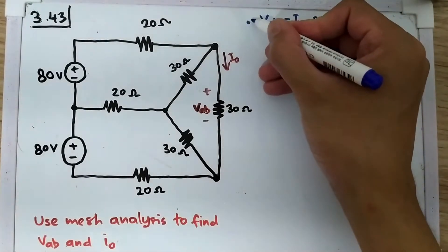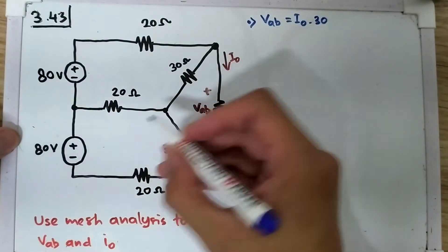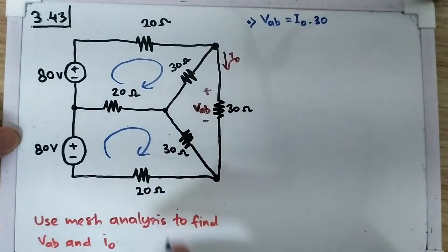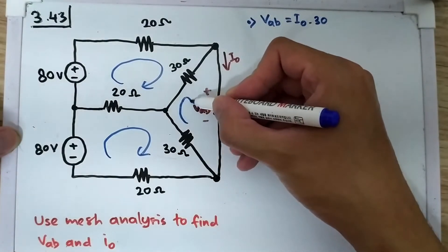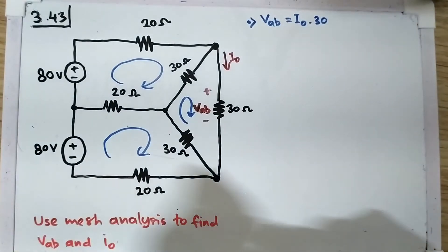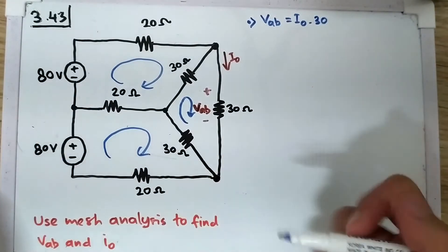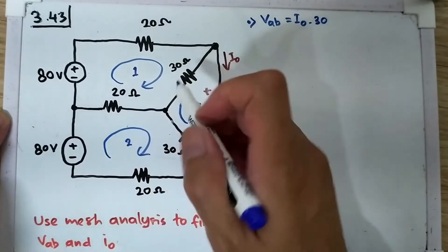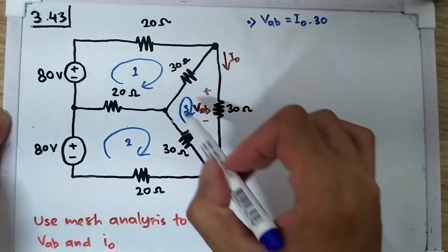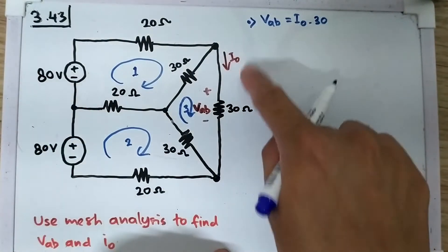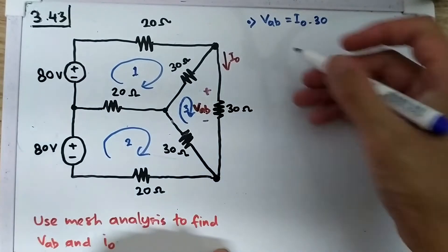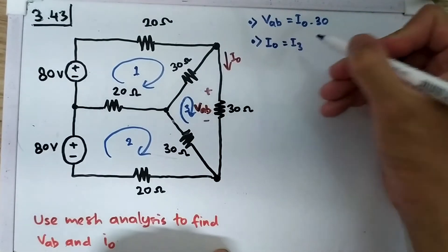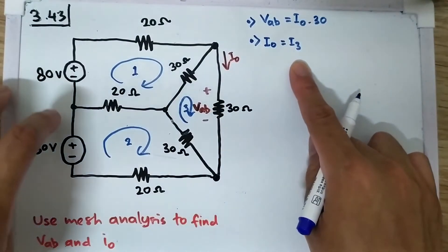Let's draw the loops — I'll draw them clockwise, though you can draw them counterclockwise and get slightly different calculations but the same result. I'll name each loop: loop 1, loop 2, and loop 3, with currents I1, I2, and I3 respectively. Since I0 is in loop 3 and flows in that direction, we can simply set I0 equal to I3.